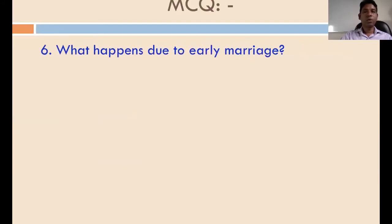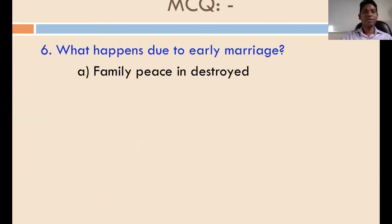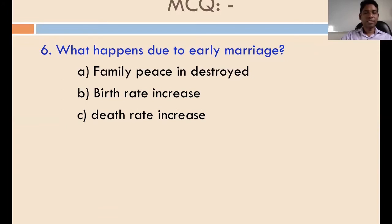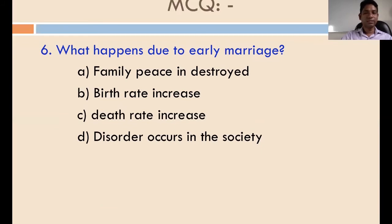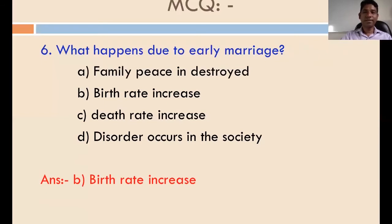Question number six: what happens due to early marriage? The options are family destroyed, birth rate increases, death rate increases, and disorder occurs in society. The answer is B — birth rate increases due to early marriage. Thank you very much.